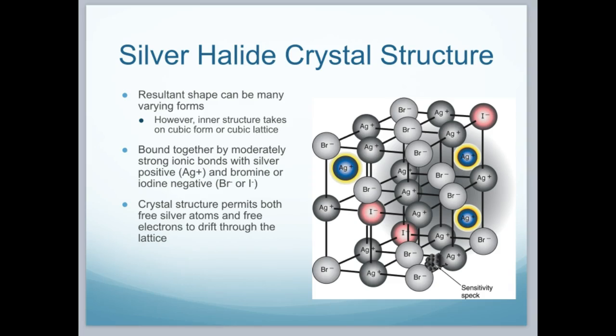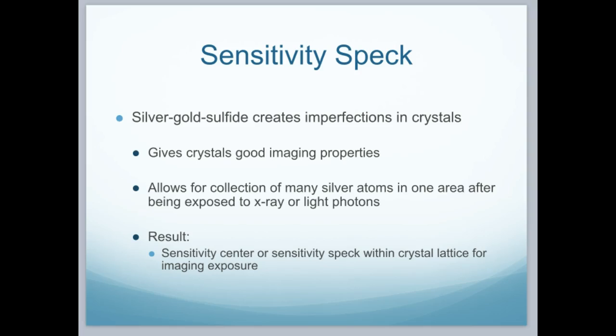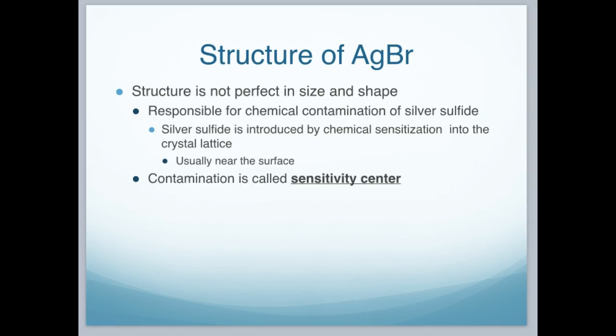Take note of this little area called the sensitivity speck. Silver and gold sulfide create imperfections in the crystals, and actually these imperfections are what allows the crystals to be good for imaging. This allows for the collection of many silver atoms in one area after being exposed to x-ray or light photons — the speck actually allows the structure to become exposed and give off a density. The structure of silver bromide is responsible for the chemical contamination of silver sulfide, which is introduced by chemical sensitization into the crystal lattice, usually near the surface. This wanted contamination is called the sensitivity center.